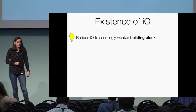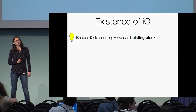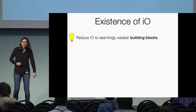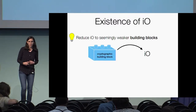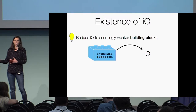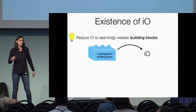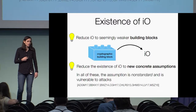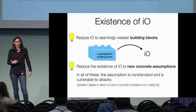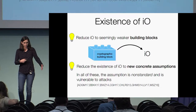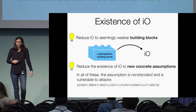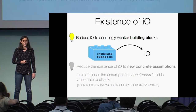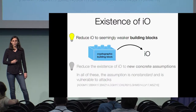There have been two approaches towards constructing IO. The first tries to reduce IO to the existence of seemingly weaker building blocks, such as taking some cryptographic building block and transforming it into IO in some way. The second tries to reduce IO to new concrete assumptions. However, in this case the assumption is not standard, so the security of these constructions is not well understood and they're vulnerable to attacks. For this reason, let us focus on the first approach of reducing IO to weaker building blocks.